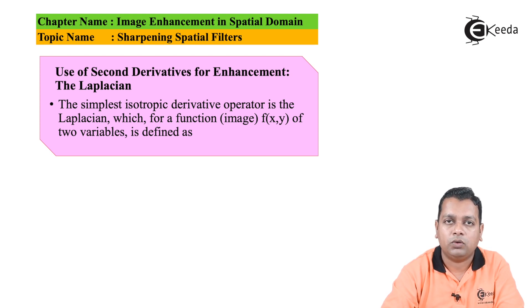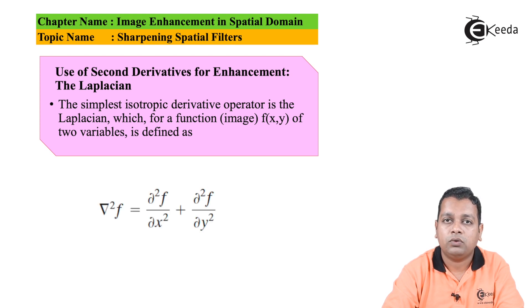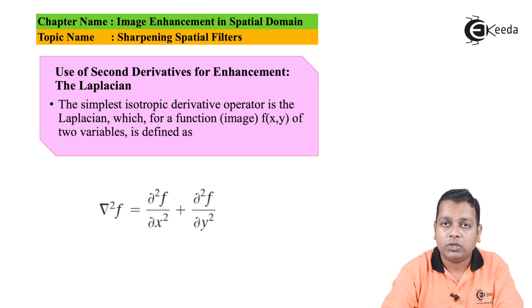We give more importance to the use of second order derivatives for the purpose of enhancement, and the operator is named the Laplacian operator. It is the simplest isotropic derivative operator, represented for an image function f(x,y) as ∇²f — the Laplacian — which consists of the sum of second order partial differentiations: ∂²f/∂x² plus ∂²f/∂y².